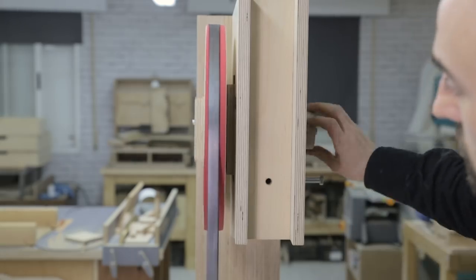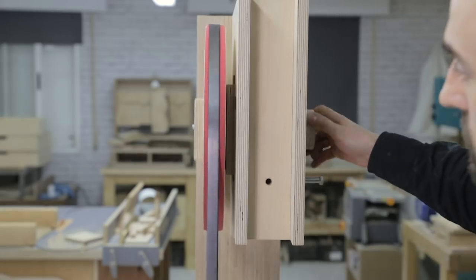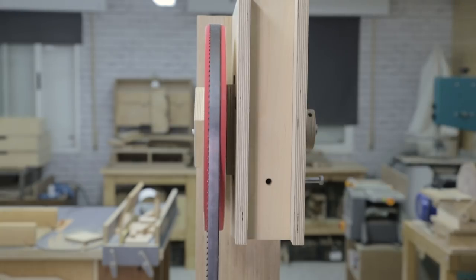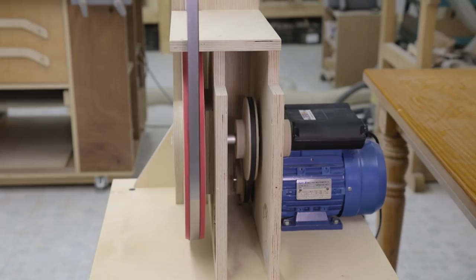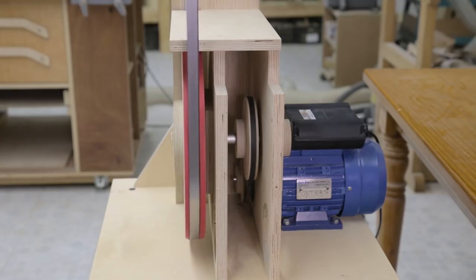As you can see, I have to tilt the upper wheel a little, and by doing so, the blade centers itself. This happens because when curving the edge of the wheels, the blade always tries to find the highest point.